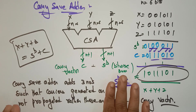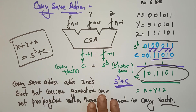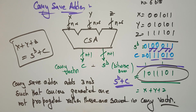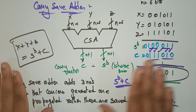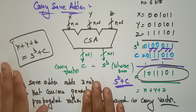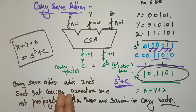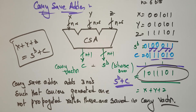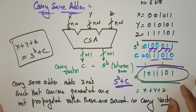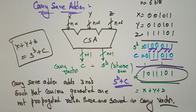These two circuits — CPA and CSA — are going to be used in the arithmetic pipeline for high speed additions. They will be used in the arithmetic pipeline organization for the fixed point multiplication operation, which we will see in the next video. Thank you.